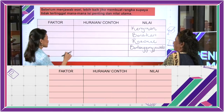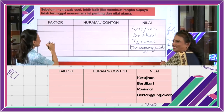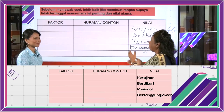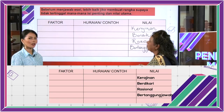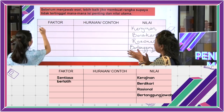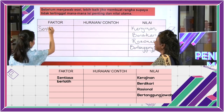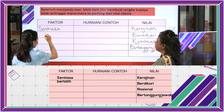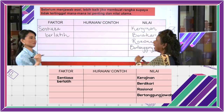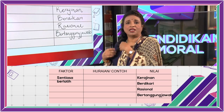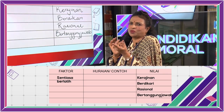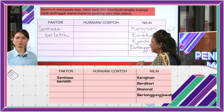Kita lihat macam mana Wani menjawab soalan ini. Ini antara yang saya dah tulis — nilai: kerajinan, berdikari, rasional, bertanggungjawab. Apa faktor pertama yang perlu ada pada seorang atlet untuk berjaya? Mestilah kena sentiasa berlatih. Betul, jawapan bagus — sentiasa berlatih. Kalau semua pelajar macam ini memang bagus. Sentiasa berlatih ini ada huraian dan contoh dia. Macam mana kita berlatih? Berapa lama yang kita gunakan untuk berlatih? Kalau berlatih setakat seminggu sekali, tak boleh.